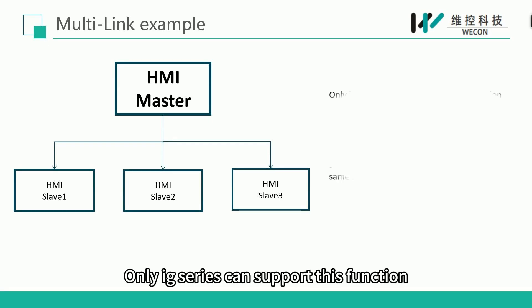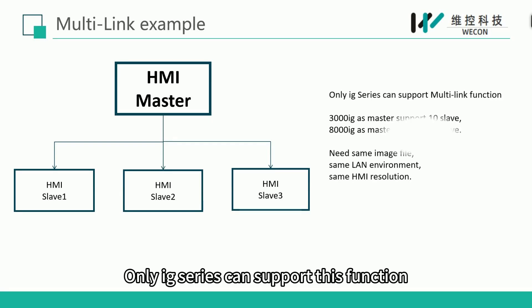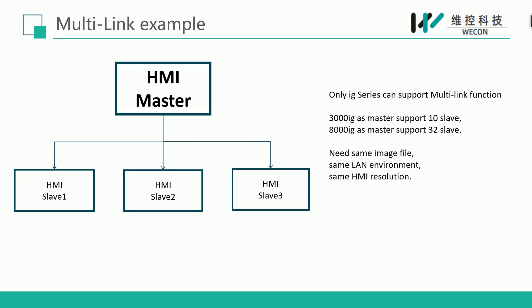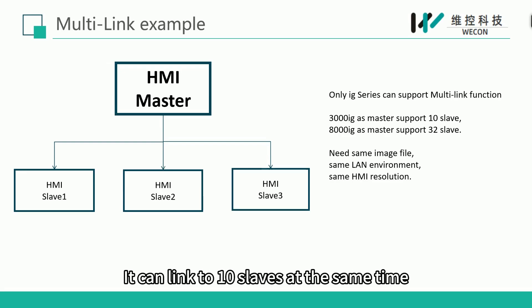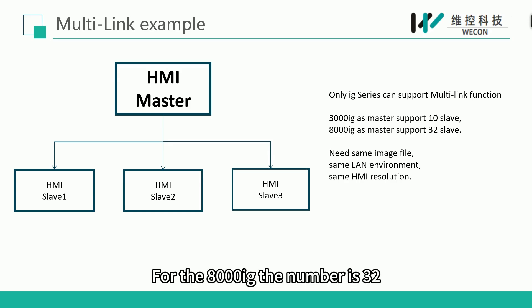Only the IG series can support this function. If a 3000IG is used as a master, it can link to 10 slaves at the same time. For the 8000IG, the number is 32.